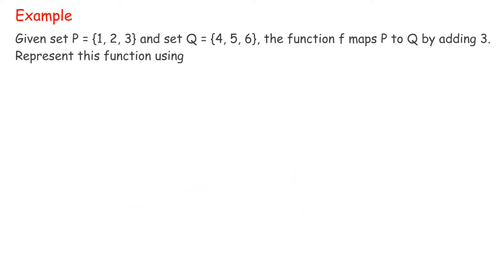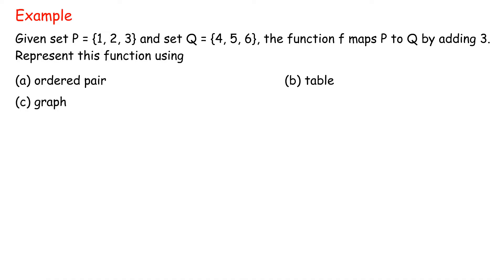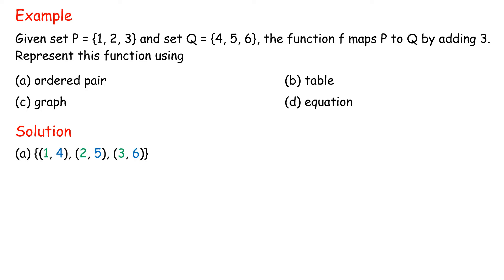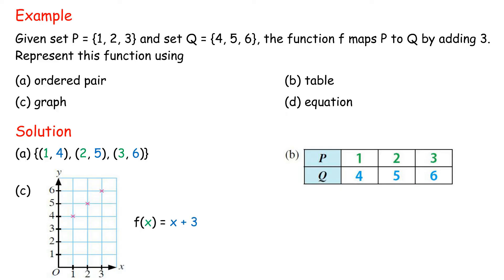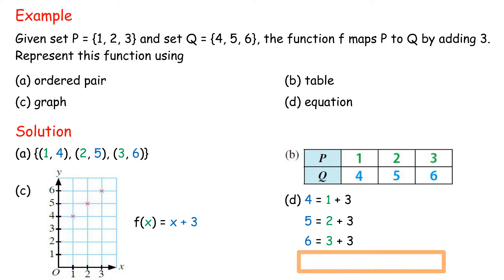Example: Given set P equals {1, 2, 3} and set Q equals {4, 5, 6}, the function f maps P to Q by adding 3. Represent this function using A) ordered pairs, B) table, C) graph, D) equation. Solution: A) {(1,4), (2,5), (3,6)}. The function can be written as f(x) equals x plus 3. D) 4 equals 1 plus 3, 5 equals 2 plus 3, 6 equals 3 plus 3, so y equals x plus 3, or f(x) equals x plus 3.